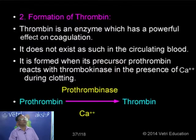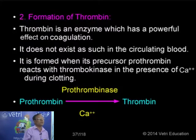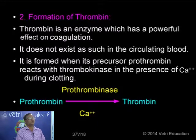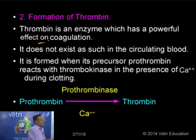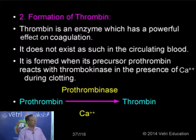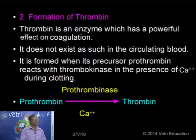During the second step: formation of thrombin. Thrombin is acting as a proteolytic enzyme, a glycoprotein formed in the liver as a precursor — prothrombin — with the help of vitamin K. Thrombin has a powerful effect on coagulation. It does not exist as such in the circulating blood; it circulates only as prothrombin and is formed when the precursor reacts with thrombokinase from the first step, in the presence of the cofactor calcium ions.